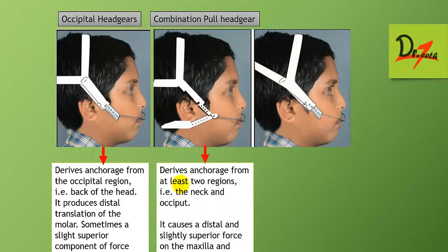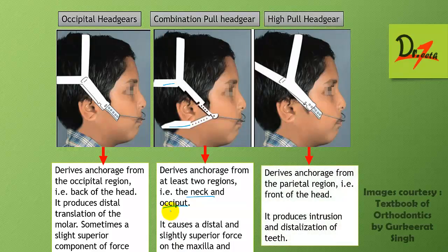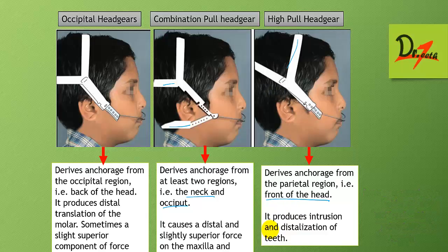We have the combination pull headgear. It derives anchorage from at least two regions — the neck and the occipital region — and it causes distal and slightly superior force on the maxilla and the dentition. Then we have the high pull headgear. It derives anchorage from the parietal region, that is the front of the head, and produces intrusion and distalization of the teeth.